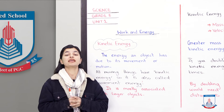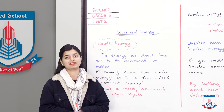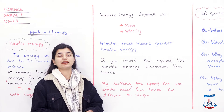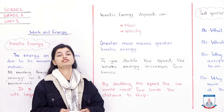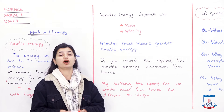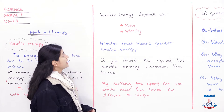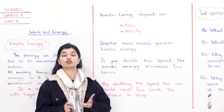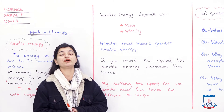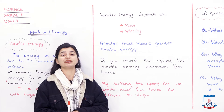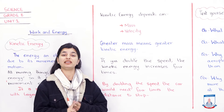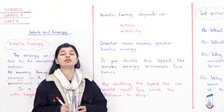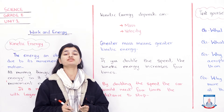Let's go ahead and see what kinetic energy depends on. Kinetic energy depends on two different things: mass and velocity. There are two things that influence any object's kinetic energy — the first is its mass, meaning how much matter it contains, and the other is its velocity.